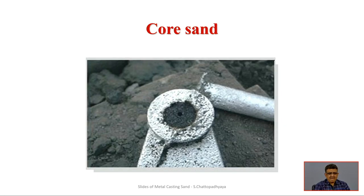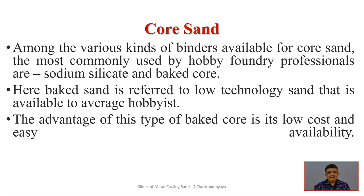Core is responsible for the creation of hollowness in castings. It is sometimes required to reduce machining — that is the advantage of having core sand. Among the various binders available for core sand, most commonly used are sodium silicate and baked cores. Great strength is required because the core sand will be surrounded by turbulent molten metal and must retain its shape. The advantage of baked core is low cost and easy availability, and economic issues are an important factor in the selection of sands.